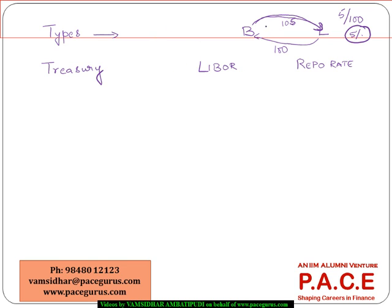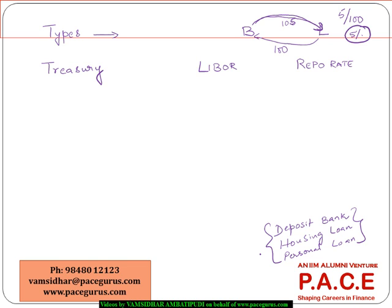The interest rate number is different in different contexts. When depositing money in a bank, the interest rate would be different compared to taking a housing loan or a personal loan. The definition is still the same — there is borrowing and lending, and the additional amount the borrower agrees to pay the lender. But the interest rates differ in each case because of differences in the credit risk involved.